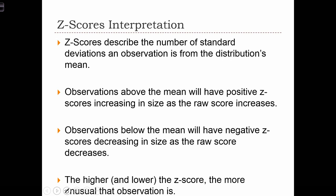Z-scores describe the number of standard deviations an observation is from the distribution's mean. Observations above the mean will have positive Z-scores, increasing in size as the raw score increases. Observations below the mean will have negative Z-scores that decrease in size as the raw score decreases. The higher or lower the Z-score, the more unusual that observation is — Z-scores near zero are very common, but Z-scores at the extremities, say plus or minus three, are very rare.